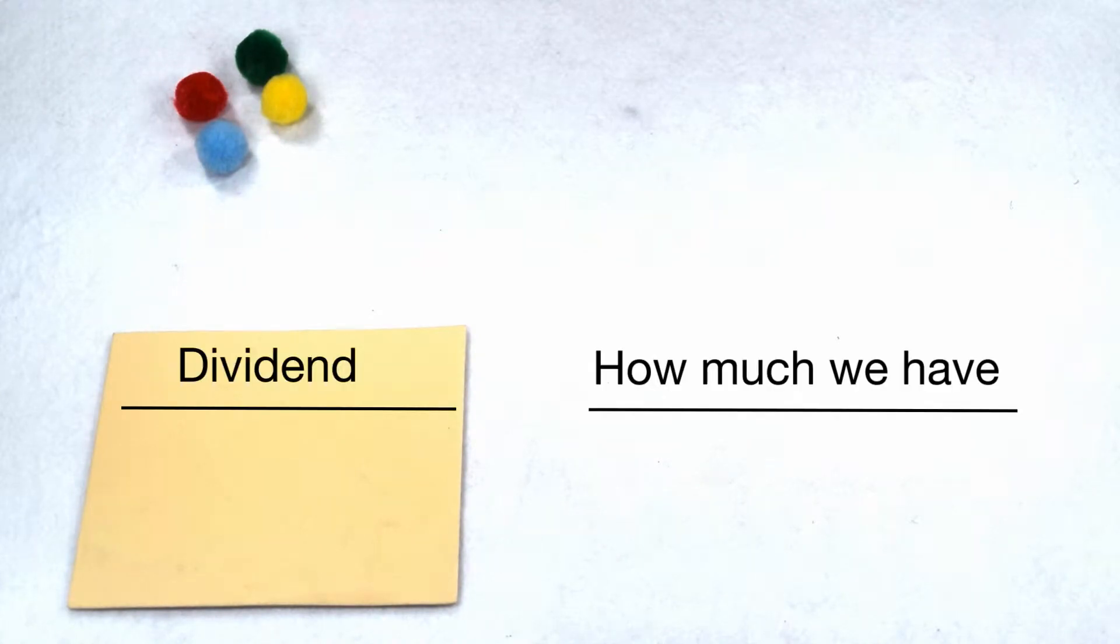In a division problem, the dividend tells us how much we have. The divisor tells us how we want to group or share it. What happens in the division problem if we use one as a divisor?